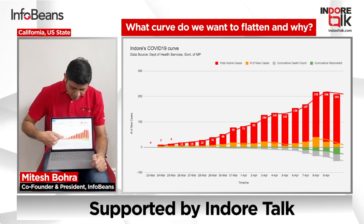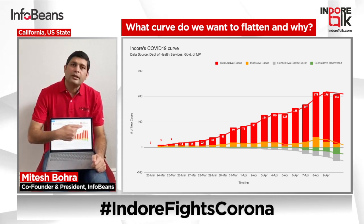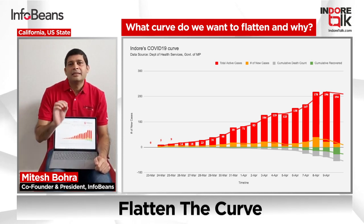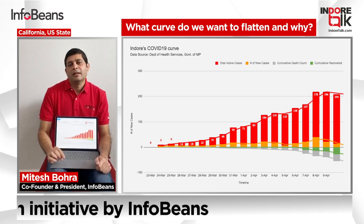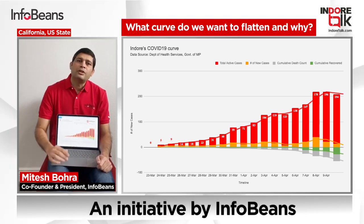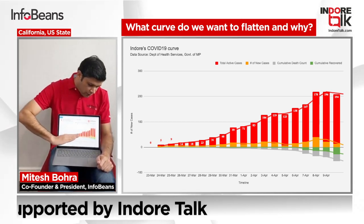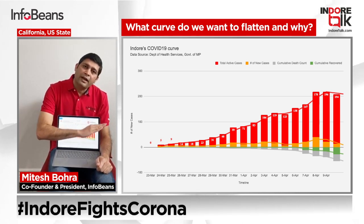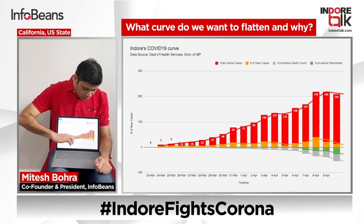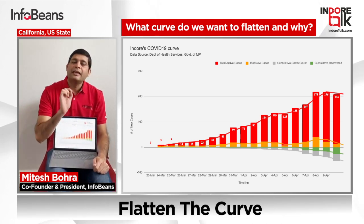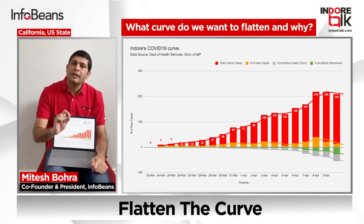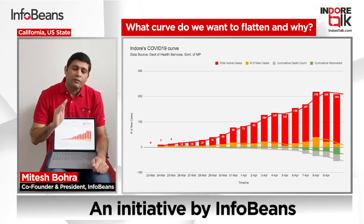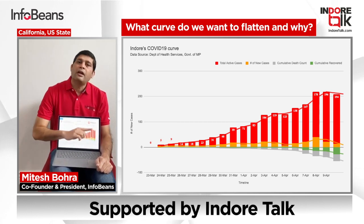We have this red curve. This red curve is what we want to flatten. That is the way we continue to flatten — we want to flatten the total active cases.